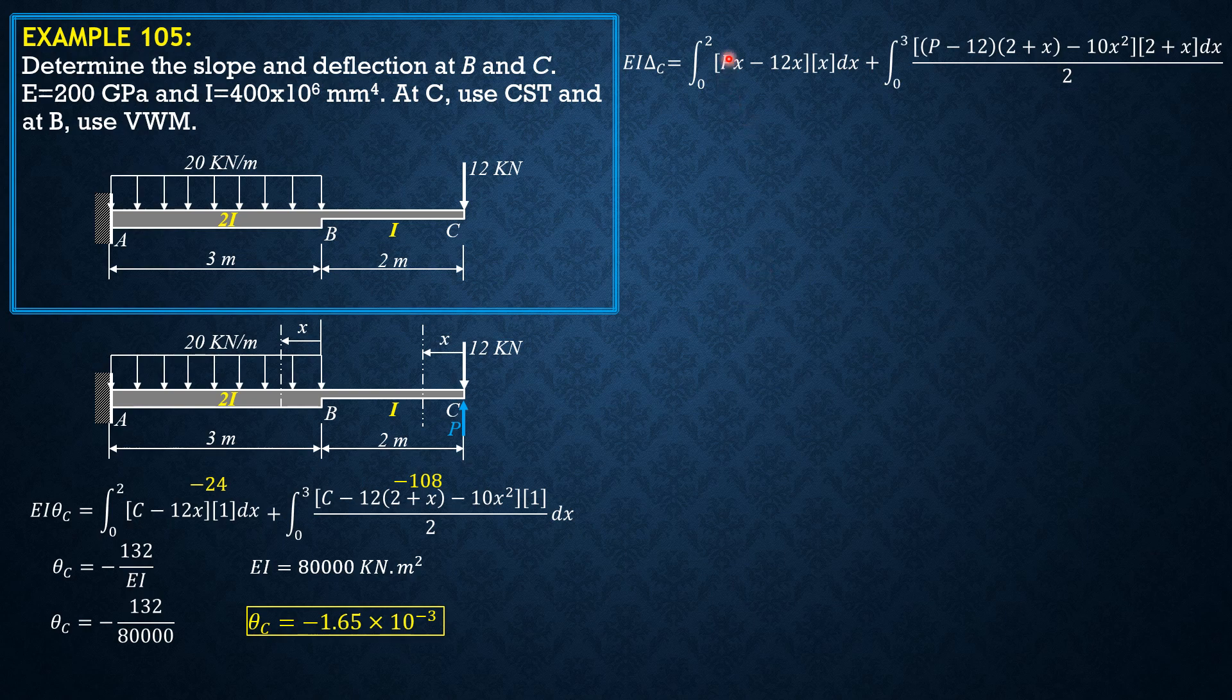Prior to integration this is 0, so integral of negative 12x squared, 0 to 2, is negative 32. Then negative 12 times 2 plus x minus 10x squared times 2 plus x over 2, 0 to 3 is negative 425.25. Combining delta C is negative 457.25 over EI, divided by 80 to convert it automatically to mm. So delta C is negative 5.716 mm.